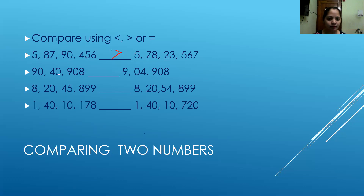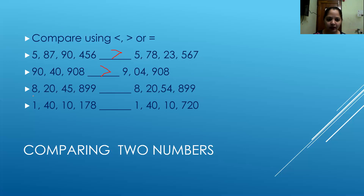In the second part, the first number is having seven digits and the second number is having only six digits. So I need not compare — I know which is the bigger one: the number with more digits, so the first number is the bigger number. For the third part, I will start comparing: eight and eight — same; two and two — same; zero and zero — same; four and five — five is the bigger digit, so my second number is the greater number here.